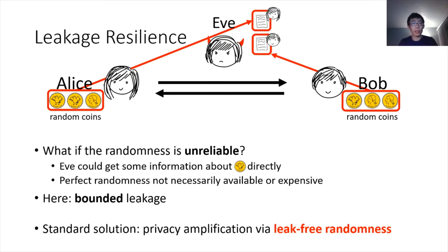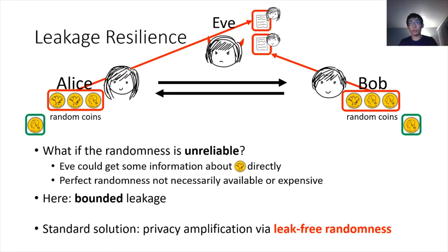It turns out this has been a very well-studied problem before, and a generic method called privacy amplification solves this. But the solutions that exist require the use of some additional randomness. We can prove that the new scheme would be leakage resilient after privacy amplification, as long as those green coins are leak-free. So as long as Eve does not get any leakage on the green coins, the protocol will be leakage-resilient. But we do not really want to make such an assumption, as it kind of defeats the purpose of leakage resilience in the first place.